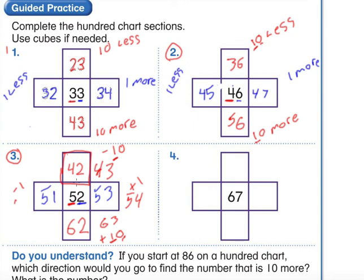Now go ahead and do number 4 all on your own, and do the rest of the packet as well. Please don't tell each other answers — I need to know who needs help. If you're all done, there are extra worksheets on the back table: a 100 chart puzzle, and also a math addition and subtraction facts coloring sheet.